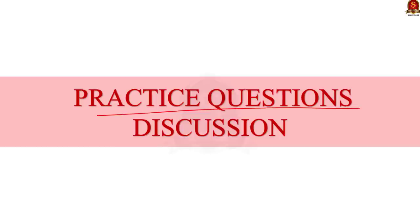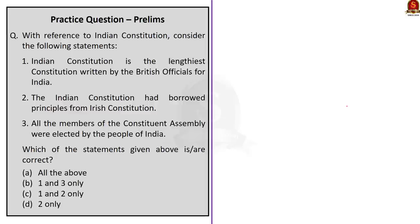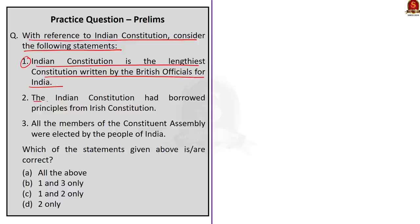Here are some prelims questions for practice. Question 1 — with reference to the Indian Constitution, consider the following statements: Statement 1: Indian Constitution is the lengthiest constitution written by British officials for India. Statement 2: The Indian Constitution had borrowed few principles from the Irish Constitution. Statement 3: All the members of the Constituent Assembly were elected by the people of India. Which statements are correct? The answer is Option D — 2 only. Statement 1 is incorrect because the Constitution was not written by British officials but by Indians from provinces of British India and princely states. Statement 2 is correct — provisions like DPSP, nomination of Rajya Sabha members, and method of election of President were borrowed from Irish Constitution. Statement 3 is incorrect because the Constituent Assembly was partly elected and partly nominated.